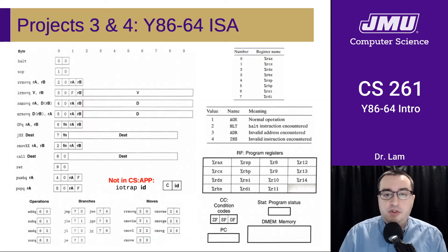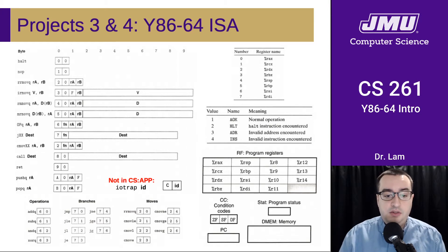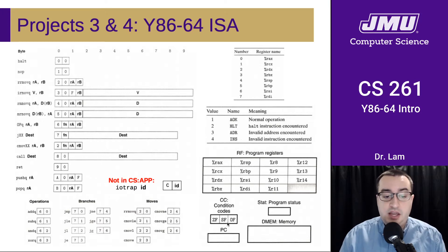Here is a brief overview — we've seen this before as a sneak peek when we finished our discussion of x86. Here is the description of the machine. We have registers — you'll see we only have up through R14, but otherwise we have the same registers as in x86. There are only three condition codes: a zero flag, a sign flag, and an overflow flag. These mean the same thing they did in x86.